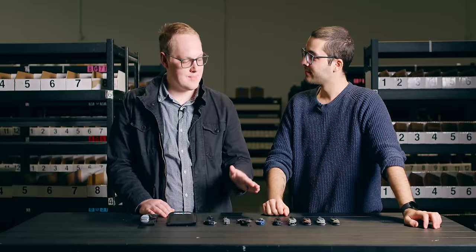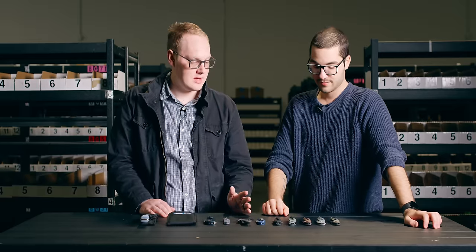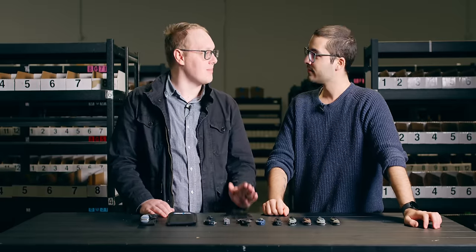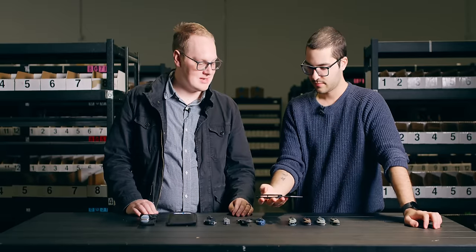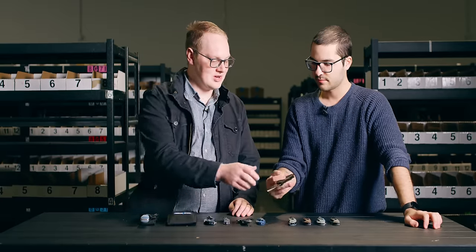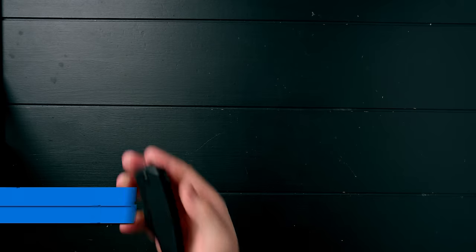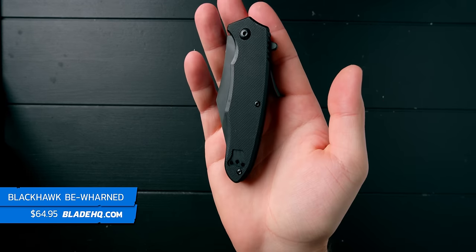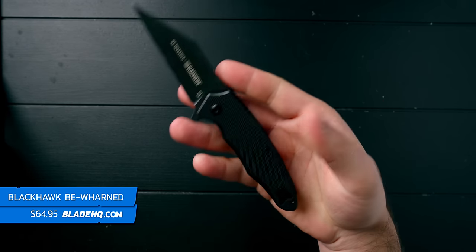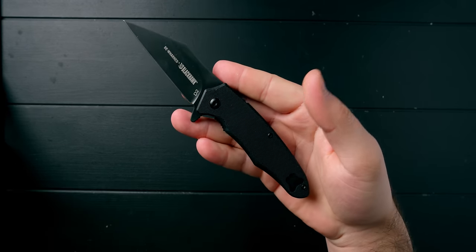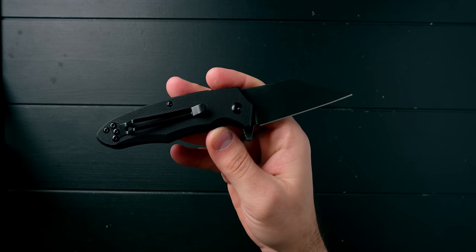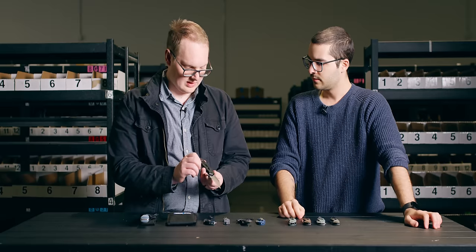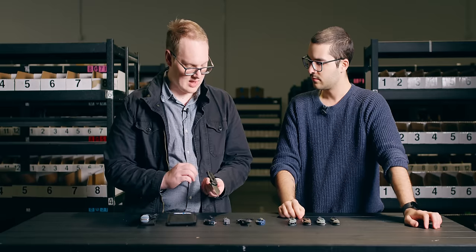Next knife on the table is the Blackhawk Be Warned. When I hear Blackhawk I think belts like my belt is a Blackhawk belt, but who knew that they made a D2 bladed assisted opening, good ergonomic, well-built knife too. I'm a fan of this one. It's a little chunky but it feels good in the hand. It's probably more self-defense oriented and in terms of comfort in hand this thing has no hot spots whatsoever.